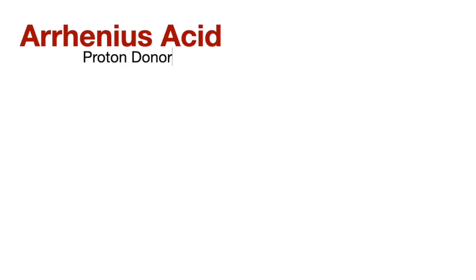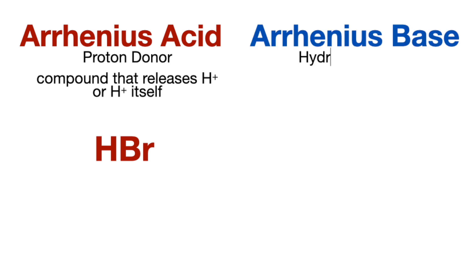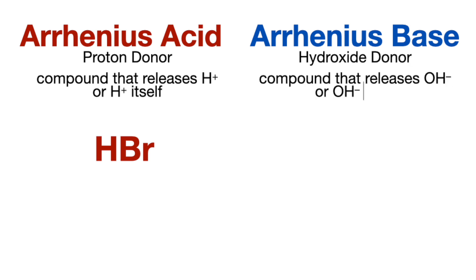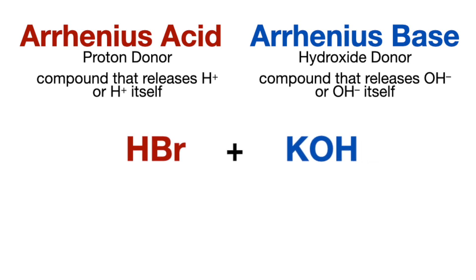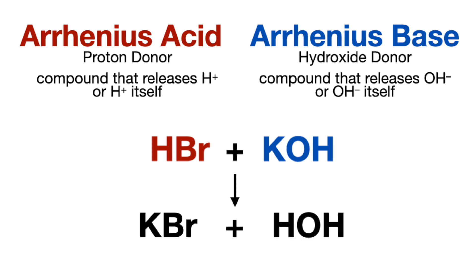An Arrhenius acid is a proton donor, meaning it's a compound that releases H+, or it's H+ itself. Chromic acid is an example. An Arrhenius base is a hydroxide donor, meaning it's a compound that releases OH-, or is OH- itself. An example is potassium hydroxide. When an Arrhenius acid reacts with an Arrhenius base, the products will be salt and water. The potassium bromide on the left is the salt, and on the right, the proton combined with the hydroxide forming water.